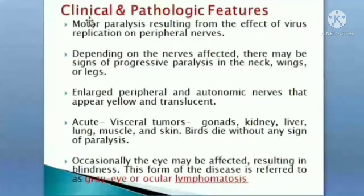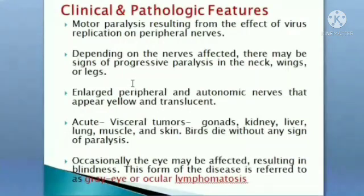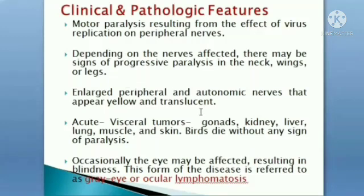In Marek's disease, herpesvirus affects the nervous system. The virus replicating on peripheral nerves causes motor paralysis — specifically, sciatic nerves are paralyzed, resulting in characteristic leg paralysis. Enlarged peripheral and autonomic nerves appear yellow and translucent. Depending on which nerves are affected, signs of progressive paralysis in the neck and legs are seen.